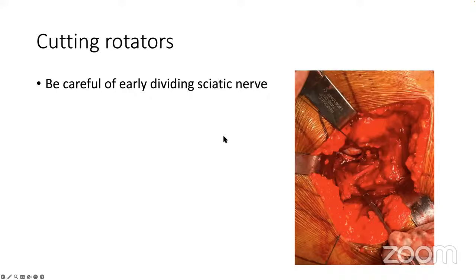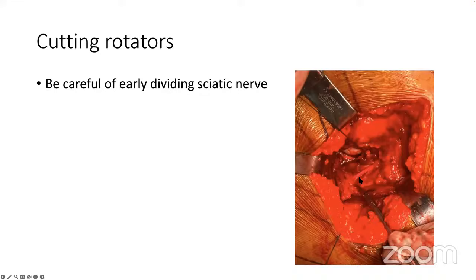Be mindful when cutting the rotators. This is an unusual situation where the sciatic nerve is divided early — the smaller division and the bigger division — with the nerve piercing the piriformis here. In such cases when you cut the rotators, you can damage the sciatic nerve. This is an uncommon situation, but something to be careful about. Always palpate the nerve and when retracting the piriformis, look for this abnormal sciatic nerve division, which can lead to sciatic nerve palsy if not recognized.